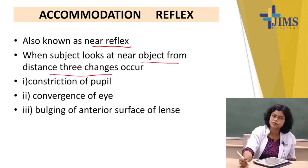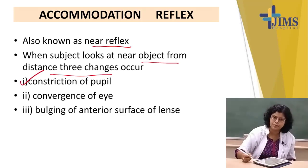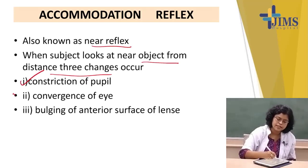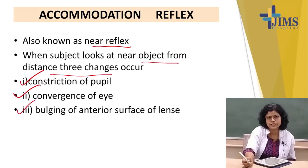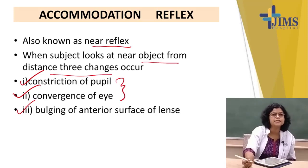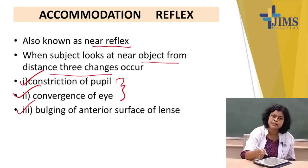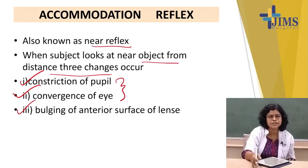In accommodation, three things occur: constriction of the pupil (miosis), convergence of the eye, and bulging of the anterior surface of the lens. The constriction of the pupil and convergence of the eye can be seen with the naked eye, but bulging of the anterior surface of the lens cannot be seen with the naked eye.